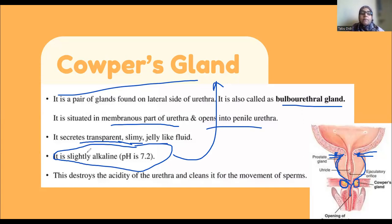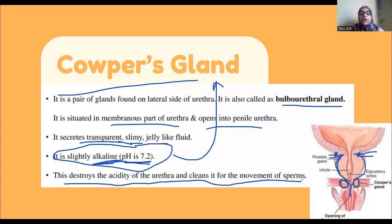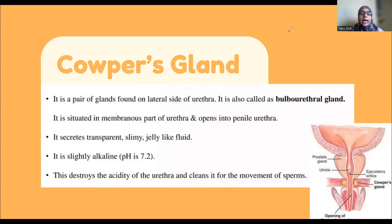Maintaining a pH of 7.2 is important because it helps destroy the acidity of the urethra and cleans it for the movement of sperm. The urethral environment is slightly acidic in nature, so the Cowper's gland ensures there is not too much acidity in the urethra by making the environment alkaline for proper functioning and movement of sperm. Pause the video and make a note of anything you don't understand.